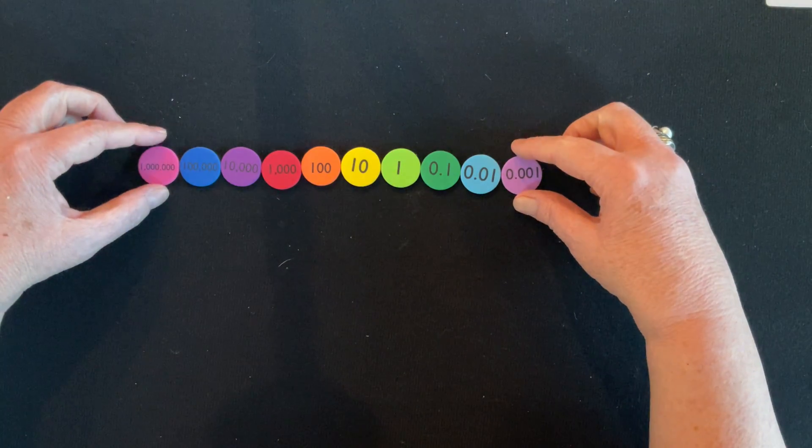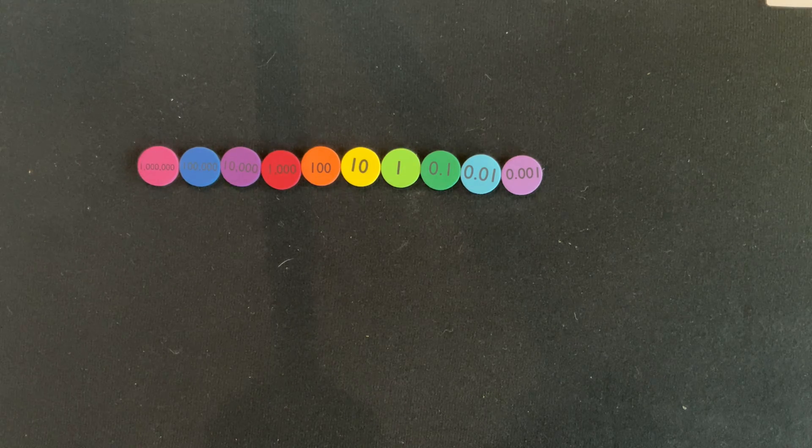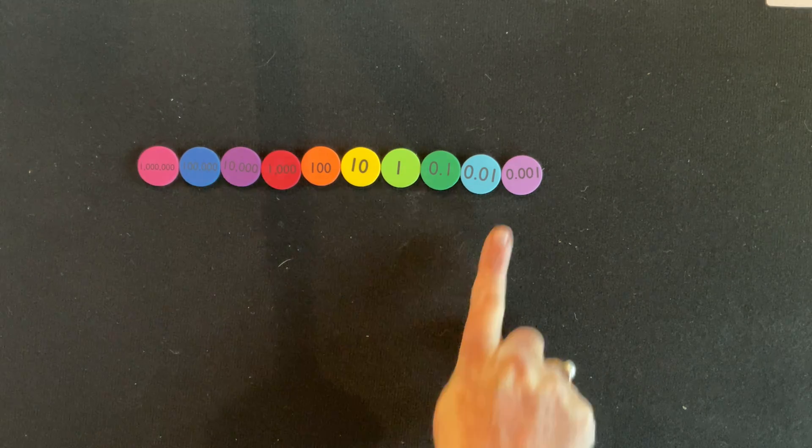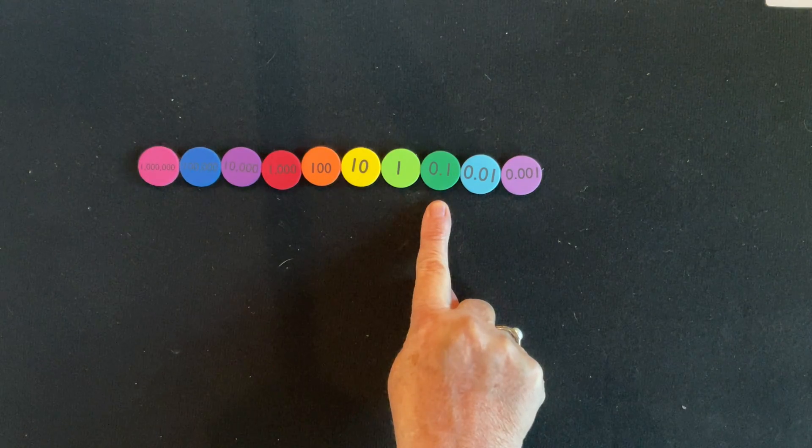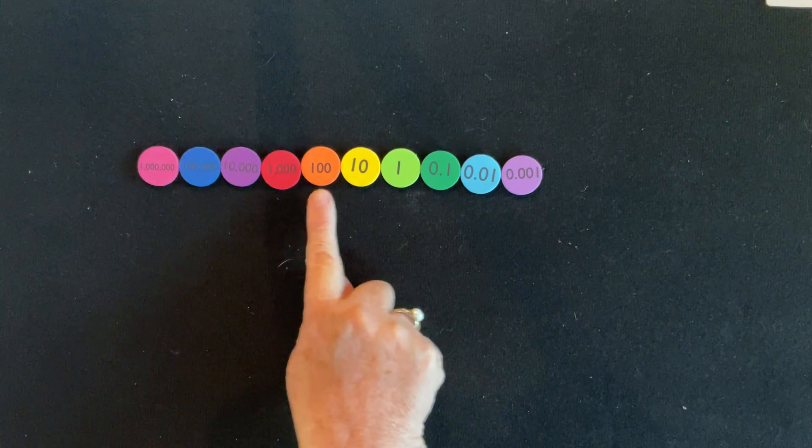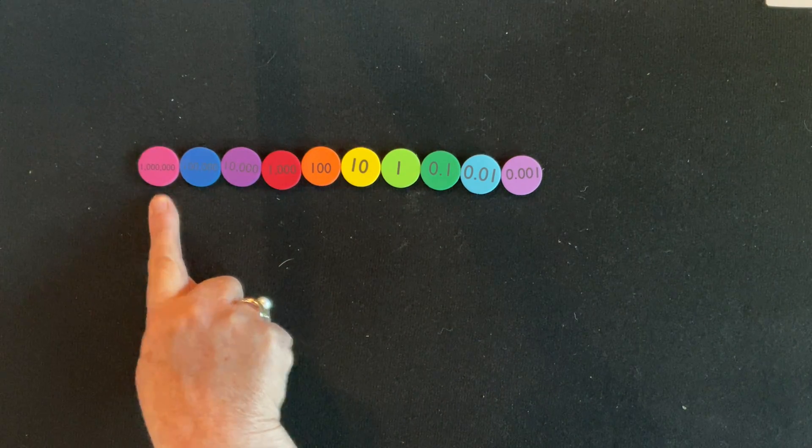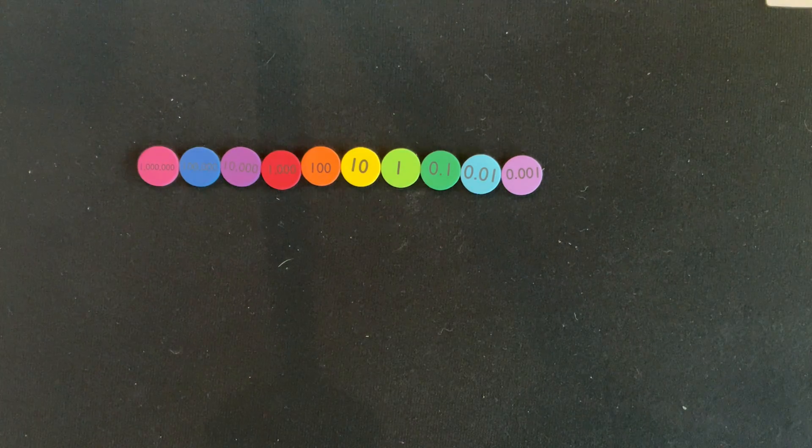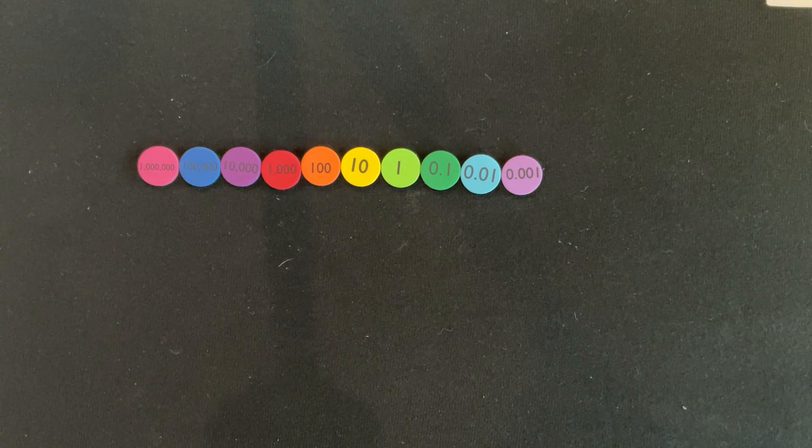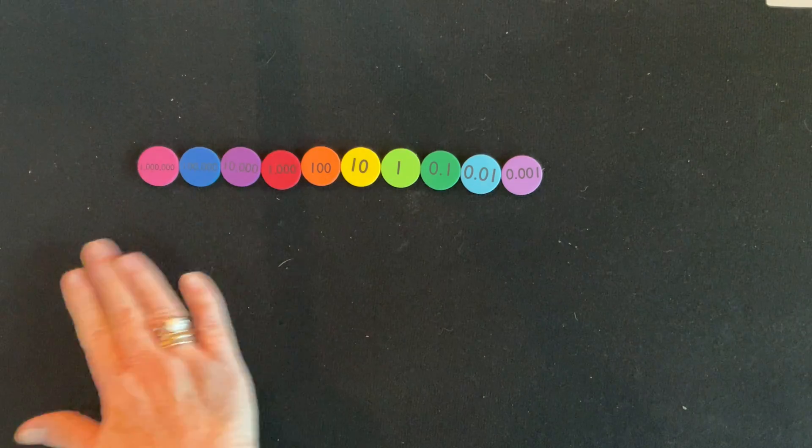This is an introduction to place value disks. The disks come all the way from thousands, hundreds, tens, ones, to ten thousands, hundred thousands, all the way to millions. You would be purchasing appropriate to your grade level aligned to your standards. They are color-coded.